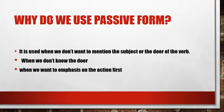First, why do we use passive form? What is the function of the passive? One: it is used when we don't want to mention the subject or the doer of the action. For example, if I don't want to say who broke something, I say 'it broke' - انكسر، مش عارف مين كسره. أنا استخدمت الباسف عشان ما أذكر مين عمل الحدث.